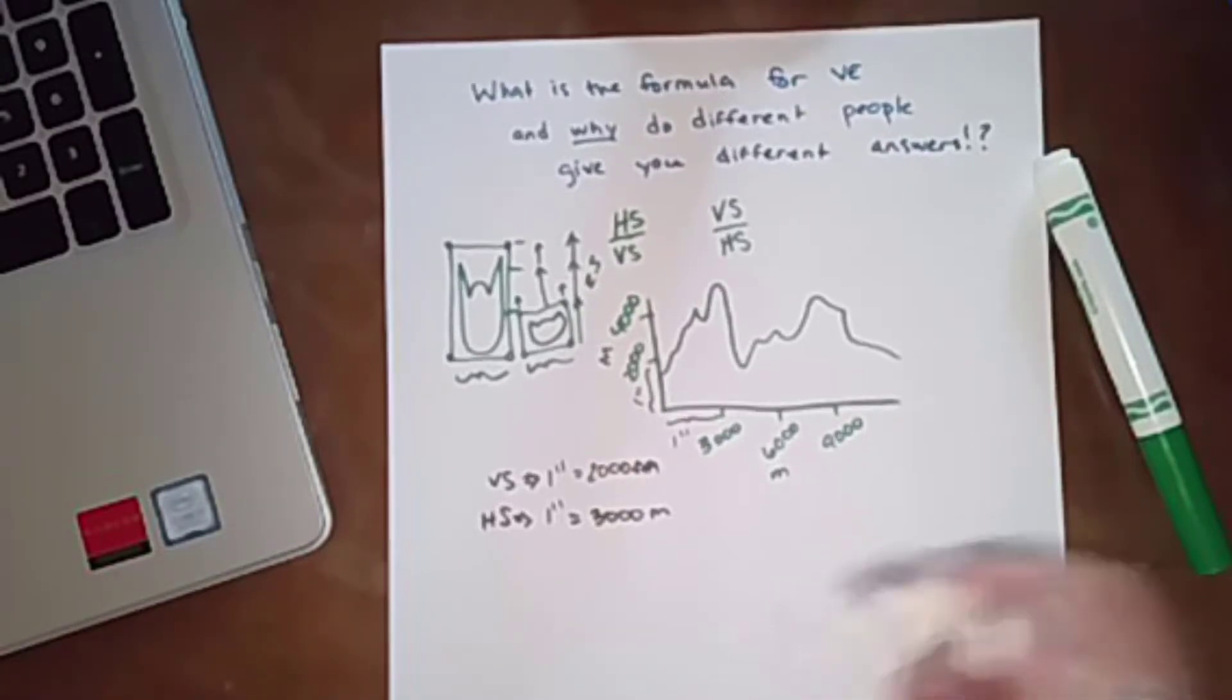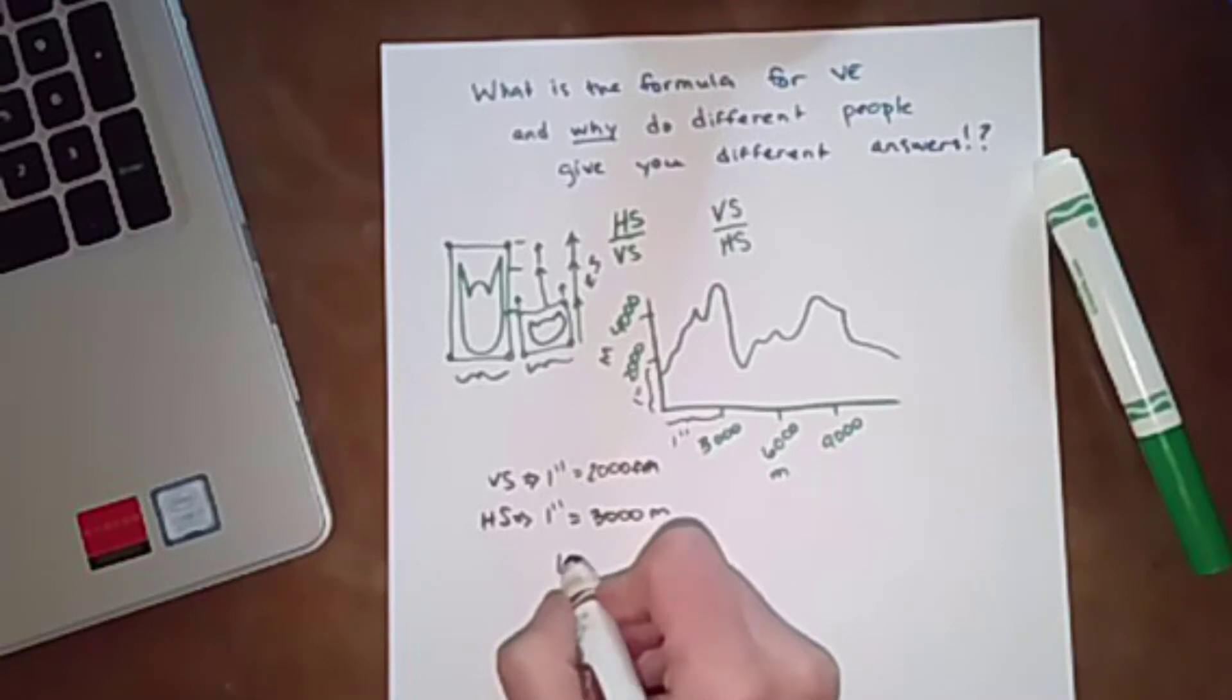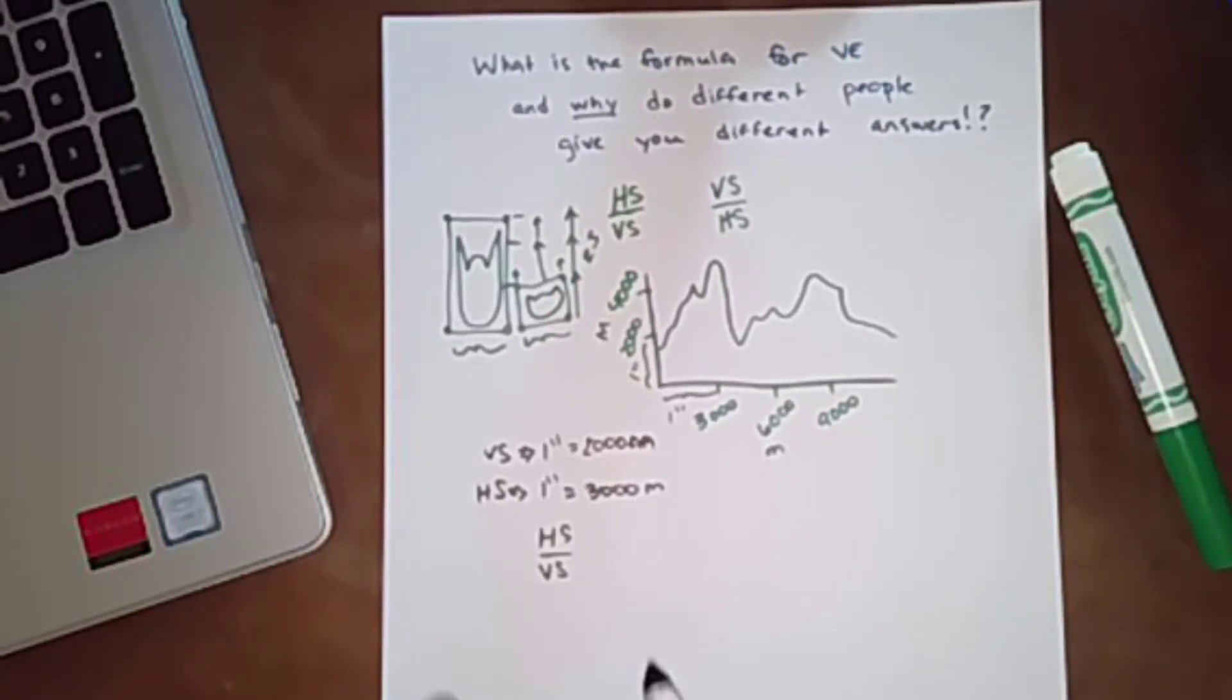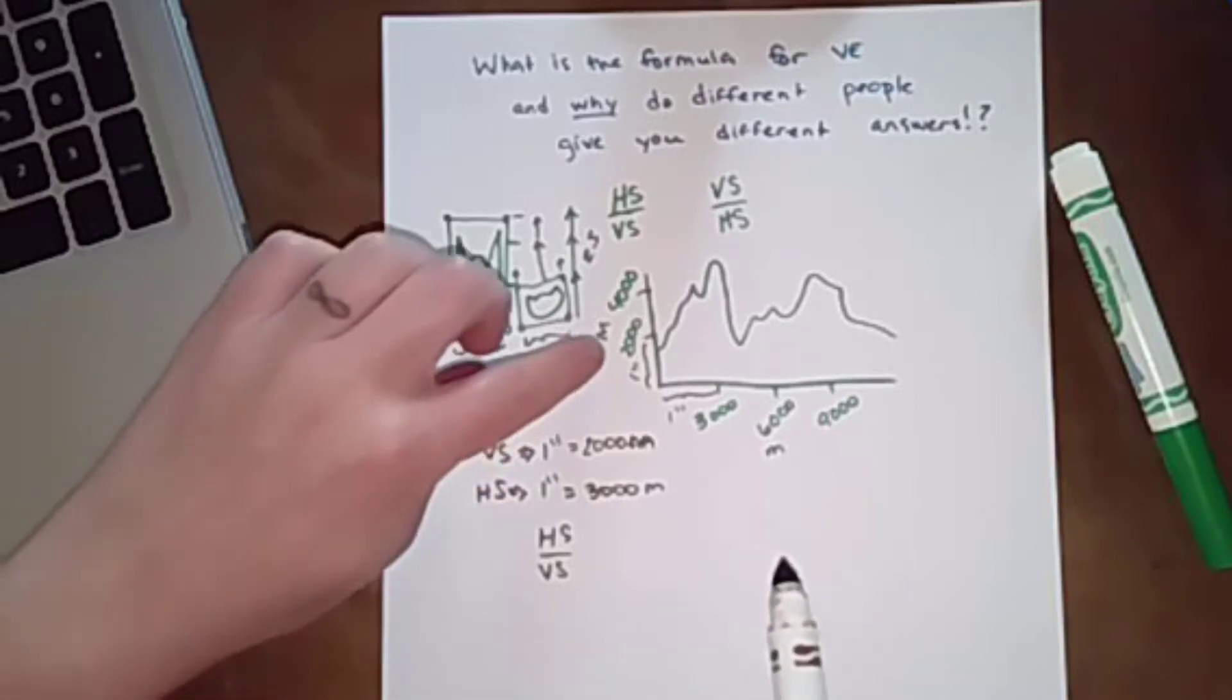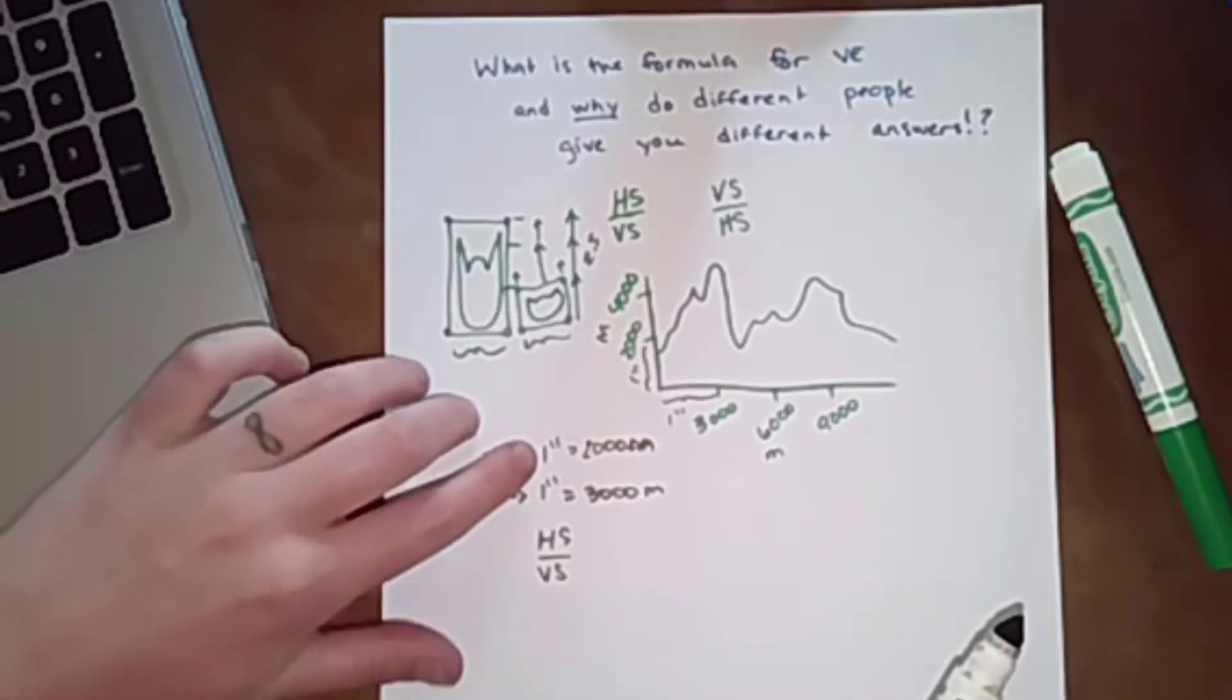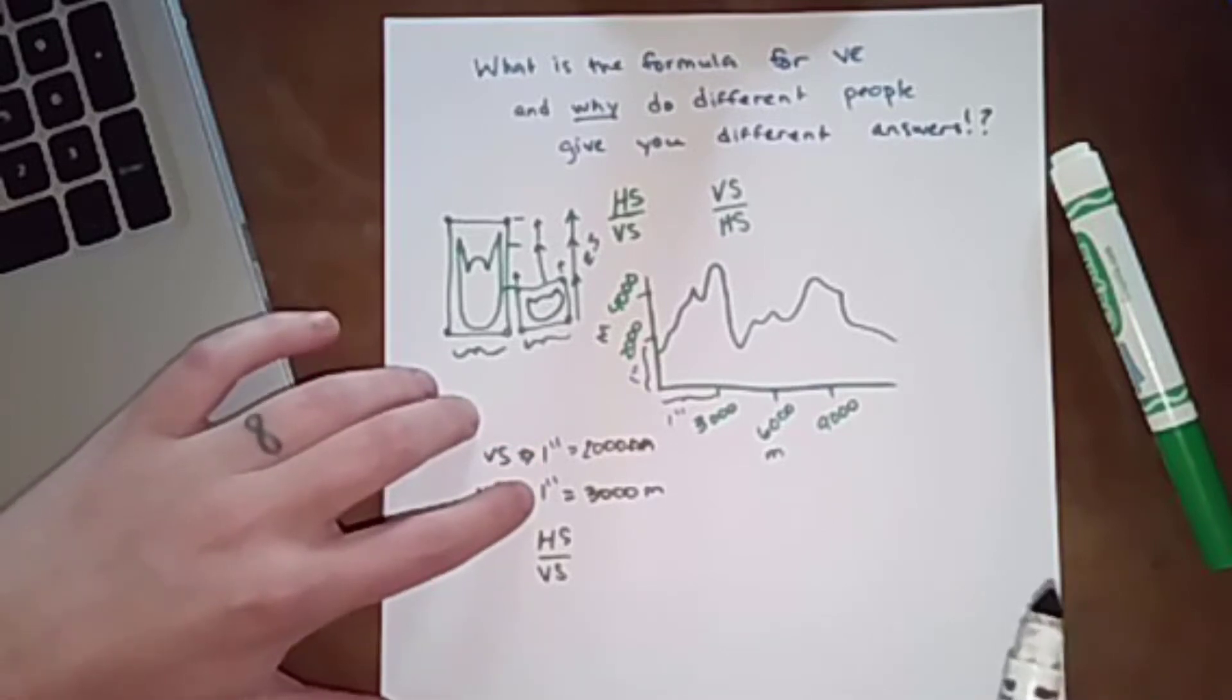Now when you see someone who tells you to divide horizontal scale by vertical scale, what those folks are actually asking you to do is get the vertical scale and the horizontal scale in such a way that this first number, this map distance, is the same.